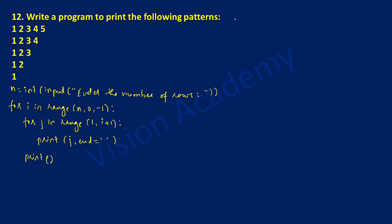Now it is time to go over the output. Once you execute this program, it will ask the user to enter the number of rows. For example, here I am going to type 5.